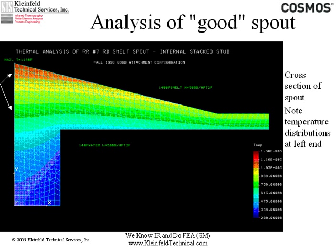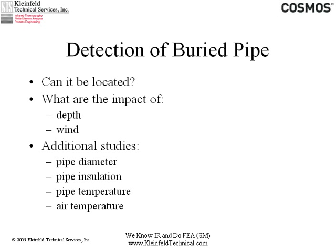Detection of buried pipe relates to an infrared application. If you have hot pipe buried in the ground and you don't know where it is, the question is: can you locate it? There's a secondary question of could you find a leak if it was leaking — leaks are easier to find than just the pipe — but this is a test case. The ground in this model was based on concrete in terms of physical properties, and you want to know the impact of the depth of burial and wind conditions. Additional studies could examine the diameter of the pipe, how well insulated it is, the process temperature inside, and the air temperature above the ground.